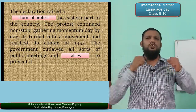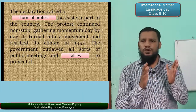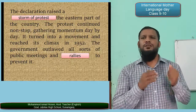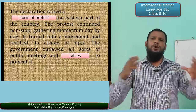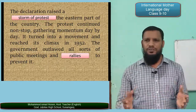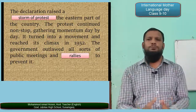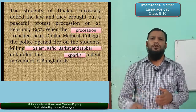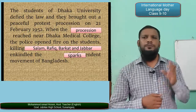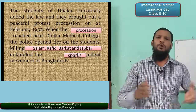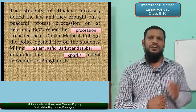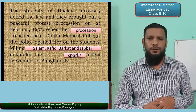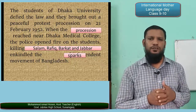The declaration raised a storm of protest in the eastern part of the country. The protest continued non-stop, gathering momentum day by day. It turned into a movement and reached its climax in 1952. The government outlawed all sorts of public meetings and rallies to prevent it. The students of Dhaka University defied the law and brought out a peaceful protest procession on 21st February 1952. When the procession reached near Dhaka Medical College, the police opened fire on the students, killing Salam, Rafiq, Barakat, and Jabbar, kindling the sparks of the independence movement of Bangladesh.